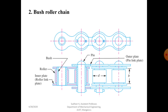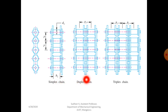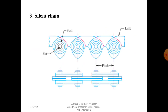Roller chains are classified into simplex, duplex, and triplex chains. These chains are standardized and manufactured on the basis of pitch. They are available in single row or multi-row: if single row it is called simplex chain, if double row it is called duplex chain, and if three rows it is called triplex chain — also referred to as strands. One more type of chain is the silent chain.